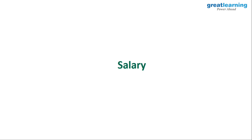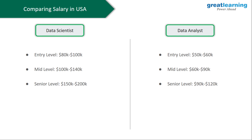Now let's compare salaries in the United States. For a data scientist, at entry level you can expect around $80,000 to $100,000; at mid level, $100,000 to $140,000; and at senior level, where high-level decision making is done, around $150,000 to $200,000. For a data analyst, entry level is around $50,000 to $60,000; mid level is $60,000 to $90,000; and at senior level, $90,000 to $120,000.